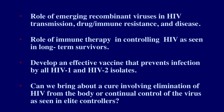Let me end with some future considerations. What is happening with emerging recombinant strains and viruses of HIV? How do they affect transmission, drug and immune resistance, and disease? Can we boost immune therapy so individuals don't need antiviral drugs and can control HIV like long-term survivors? Can we get an effective vaccine that prevents infection by all HIV-1 and HIV-2 isolates? And finally, could we bring about a cure — eliminating HIV from the body, or introducing continual control of the virus through CD8 cells so there is no evidence of virus in the blood, as seen in elite controllers. Thank you very much.